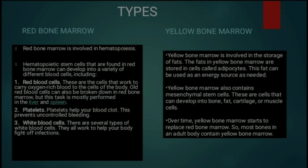Ab types of bone marrow: first red bone marrow, second yellow bone marrow. Red bone marrow hematopoietic cells ke process mein involved hai. Hematopoietic stem cells jo red bone marrow mein paaye jate hain wo further develop hokar teen different blood cells mein distribute hote hain: red blood cells (RBCs / erythrocytes), platelets (thrombocytes), aur white blood cells (leukocytes).